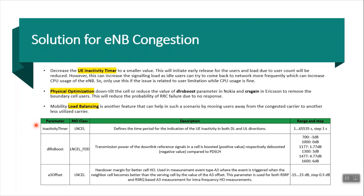Suppose the inactivity timer is 30 seconds. Once we disconnect the call, UE will not completely release from eNodeB — it stays connected via RRC for 30 seconds. If we reduce this from 30 seconds to 10 or 5 seconds, then the UE will release early from eNodeB, freeing up resources and allowing new users. This is how we can optimize the inactivity timer by reducing it when eNodeB is busy.